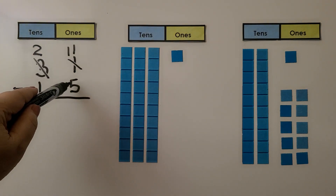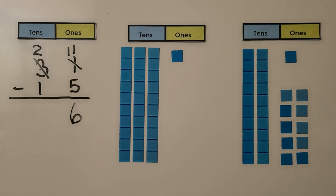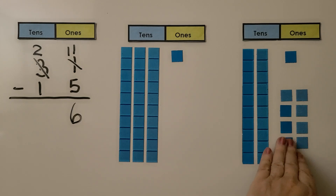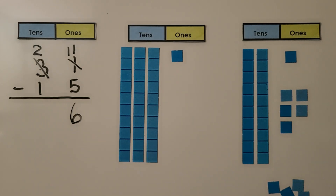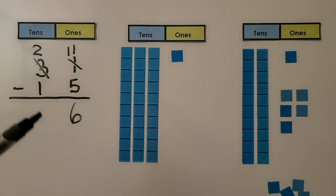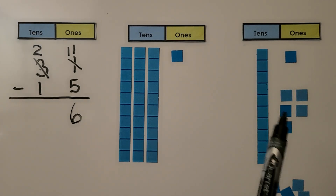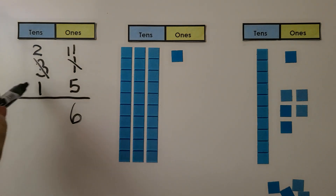Now we have eleven minus five. We can do that — that's six. We can take five of these away and see there are six ones left. Because we traded a ten for ten ones, we have two tens. We still need to take this ten away — two tens minus one ten. We take one ten away and we're left with one ten, six ones. Two minus one is one ten. It's equal to sixteen.